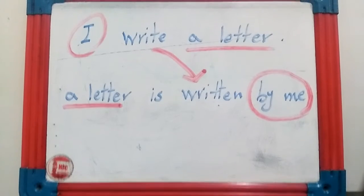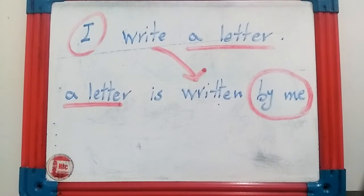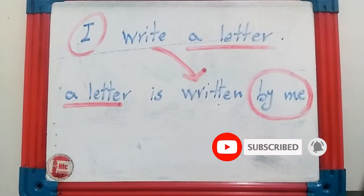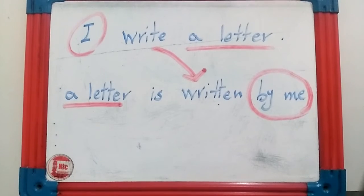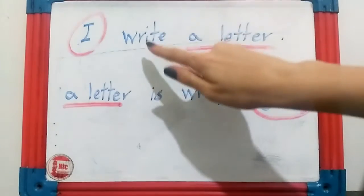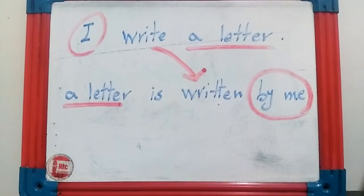Please look at these two sentences. The first sentence is: 'I write a letter.' Here, 'I' is the subject, 'write' is the verb, and 'a letter' is the object. This sentence is active — it's an active sentence because the subject (I) is clearly doing the action: 'I write a letter.'